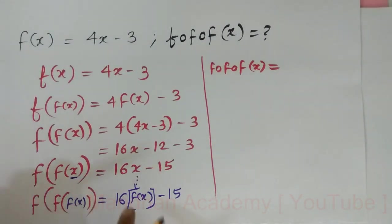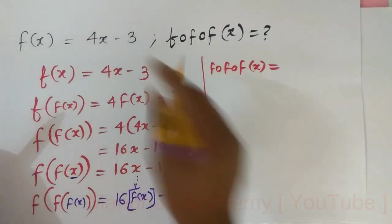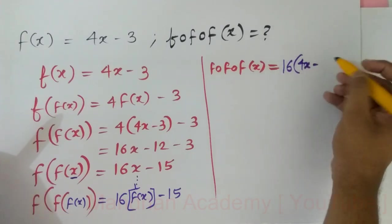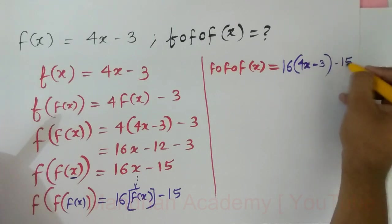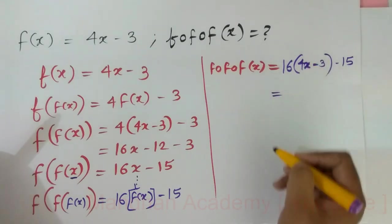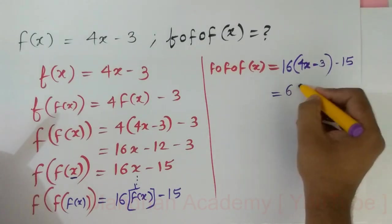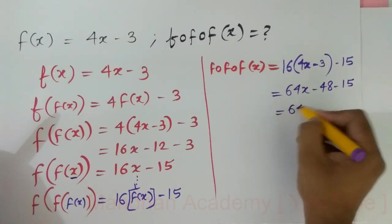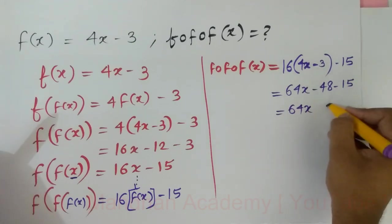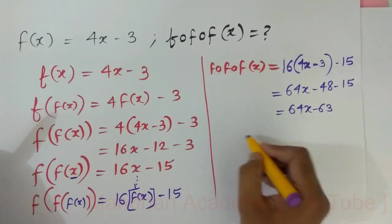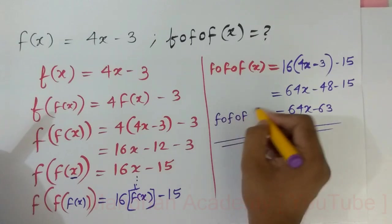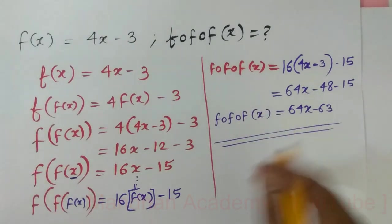What is originally f of x? The f of x is 4x minus 3. So 16 times 4x minus 3, 4 times 16 is 64. I am left with 64x minus 48 minus 15, which equals 64x minus 63.